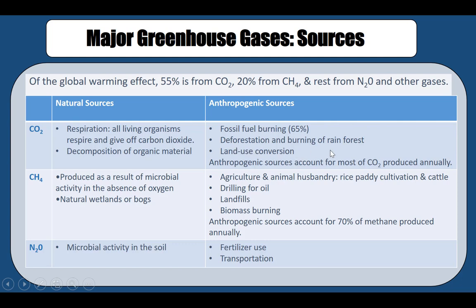Deforestation also removes plants that would otherwise absorb greenhouse gases like CO2 through photosynthesis, and burning of rainforests produces more CO2. Land use conversion — for example, converting forest areas or grassland into a city — removes the natural sink of CO2. As a result, anthropogenic sources of greenhouse gases now produce far more than natural sources.